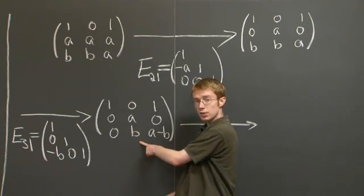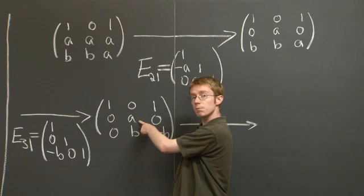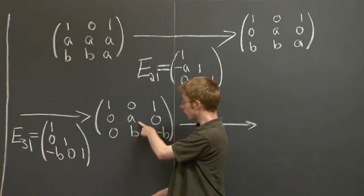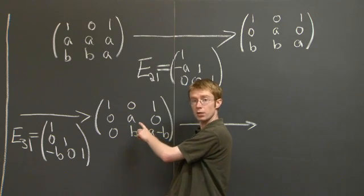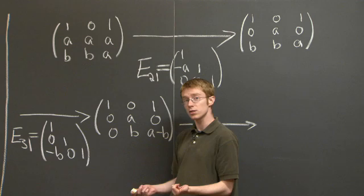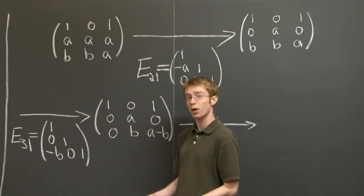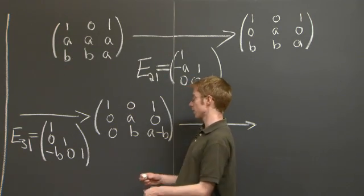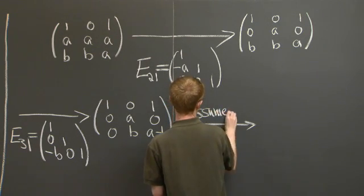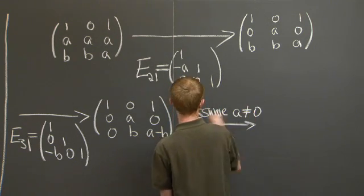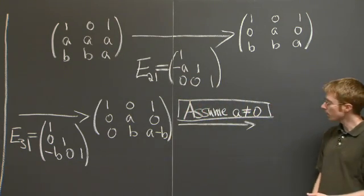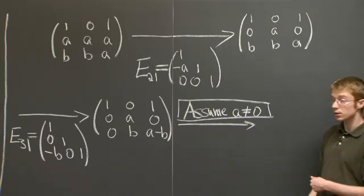In order to eliminate this b, we need a to be a pivot. In particular, we need a to be non-zero. If a were 0 here, then we would have to do a row exchange. And that's no good. You can't find an LU decomposition if you have to do a row exchange in elimination. So we need to assume that a is non-zero in order to keep going. So let's just assume that a is non-zero.